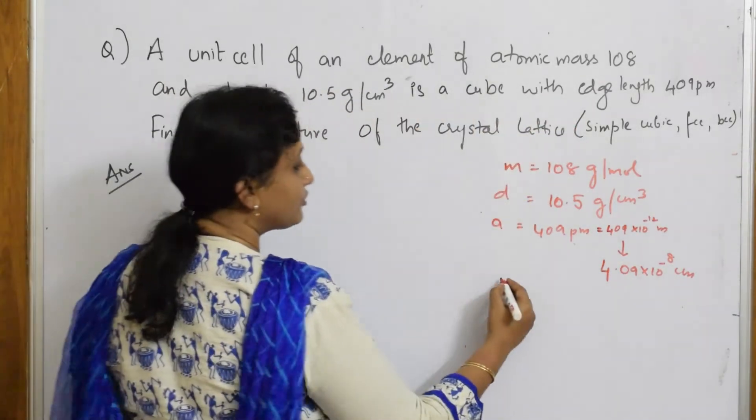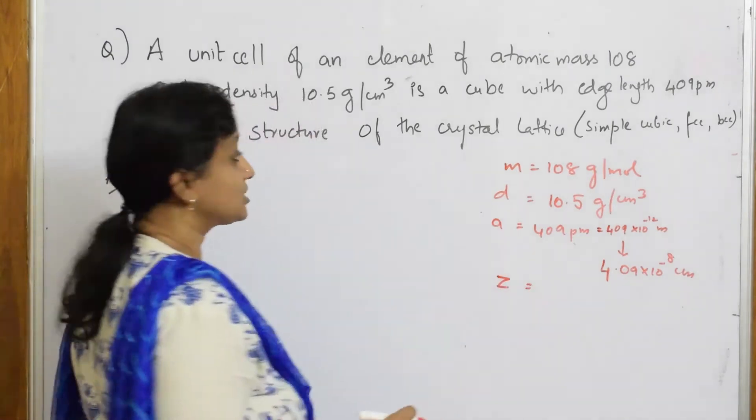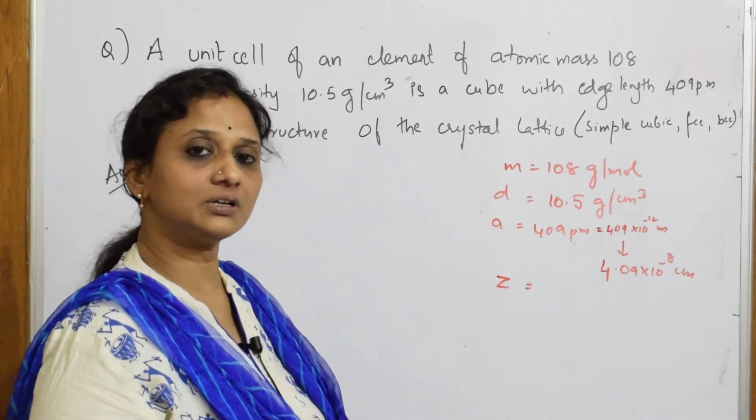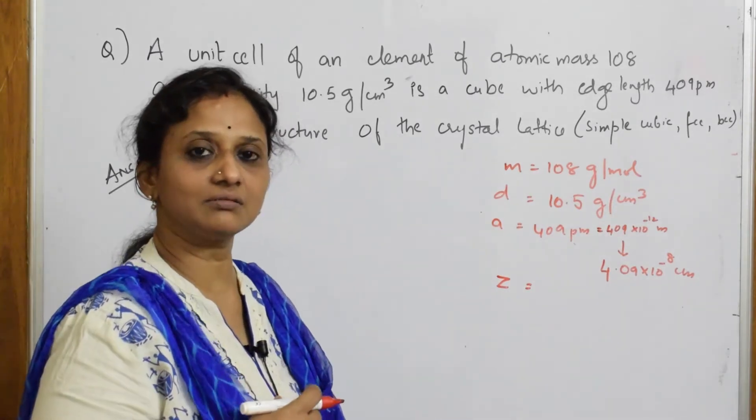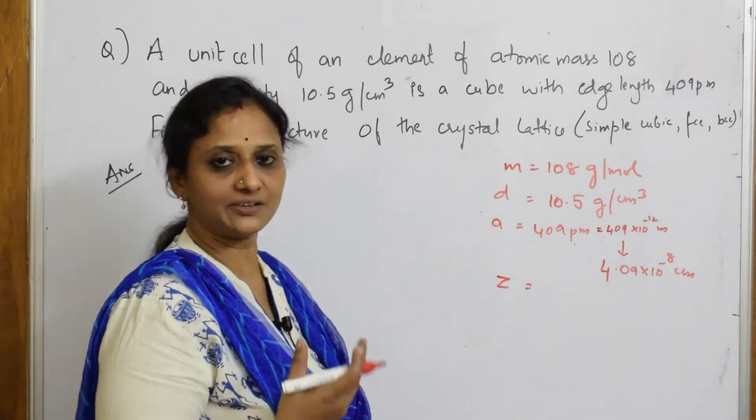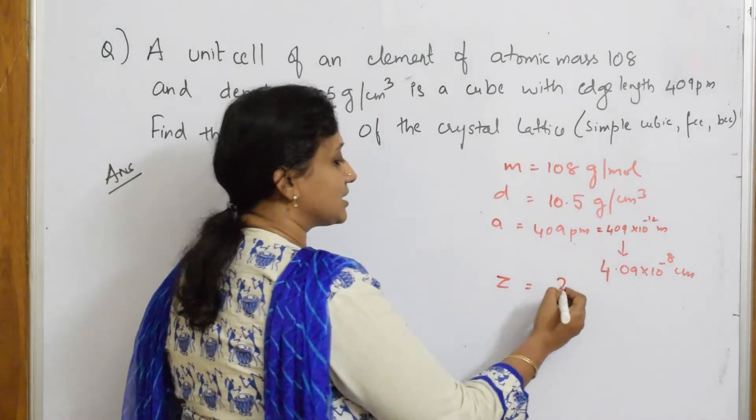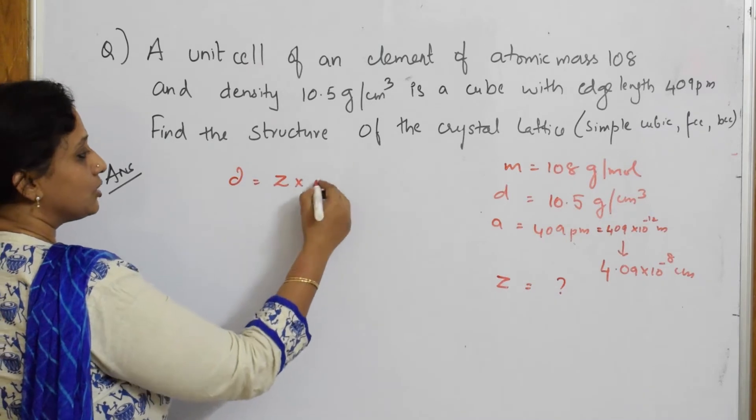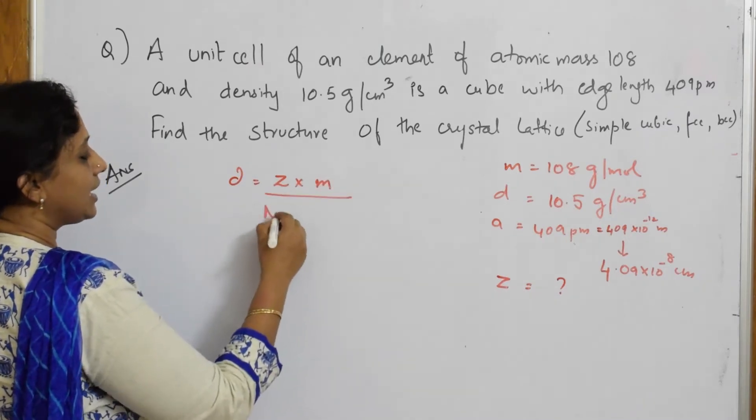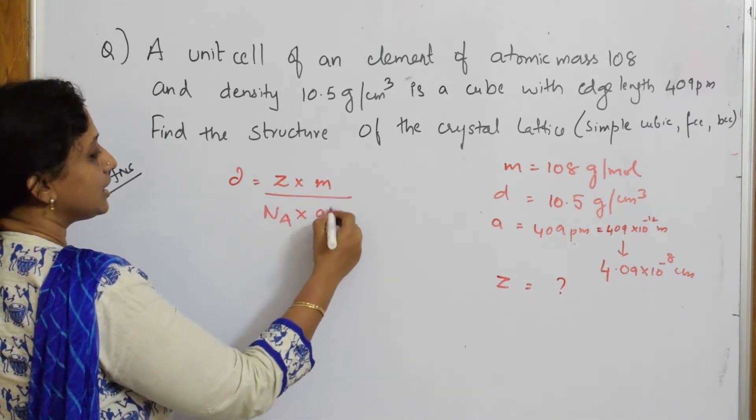After that, what should I find? I have to find out Z. Structure of the crystal means I have to find out the number of atoms so that I can directly with the number of atoms, I can analyze whether it is SCC, FCC or BCC. I have to find out Z. Now, let us write the formula. D is equal to Z into the molar mass divided by Na into your A cube.